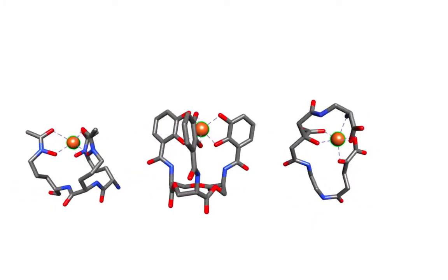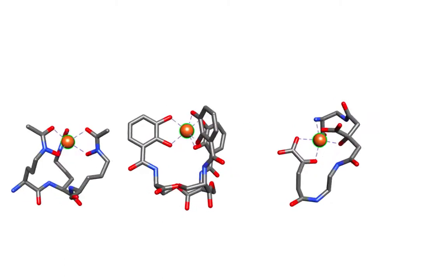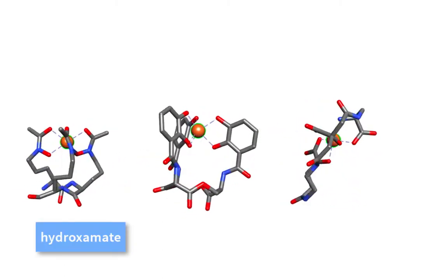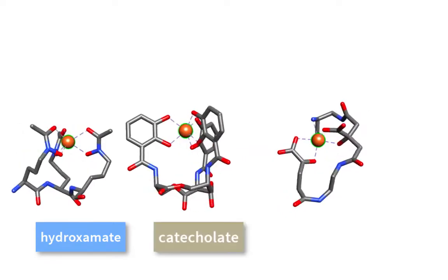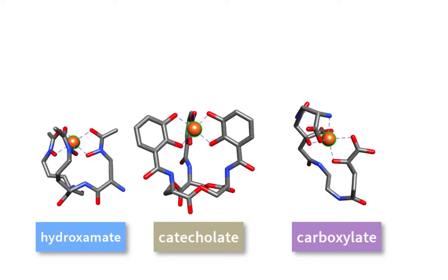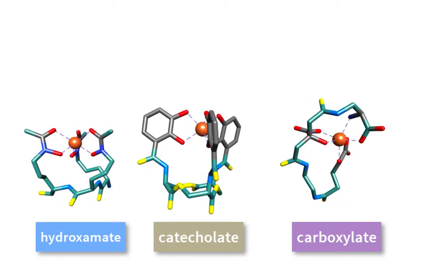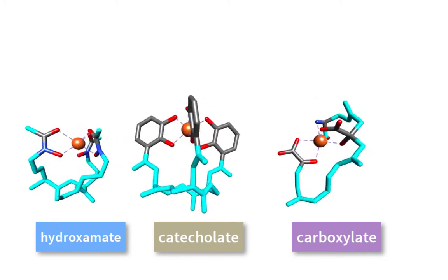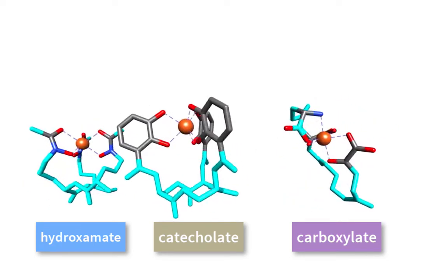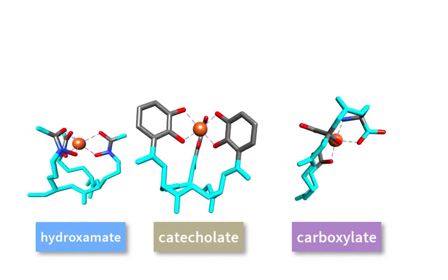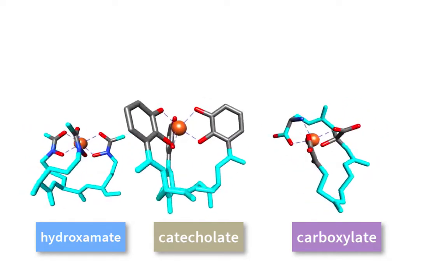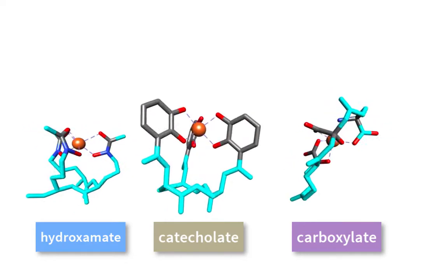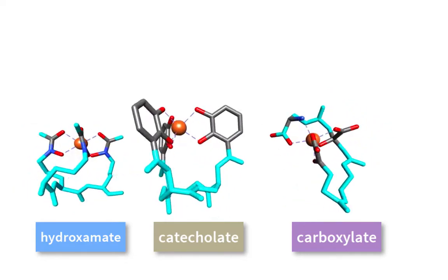There are hundreds of different siderophores, but the most common of these fall into one of three groups: hydroxymates, catecholates, and carboxylates. In this depiction, the functional groups that characterize each kind of siderophore are emphasized in gray, red, and blue. The teal highlights the R groups, which vary between specific siderophores.